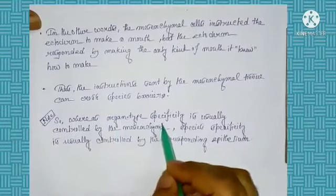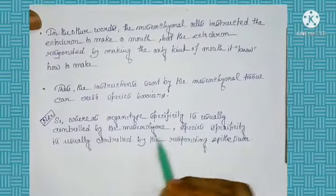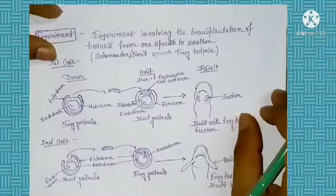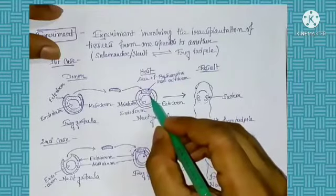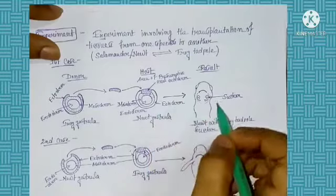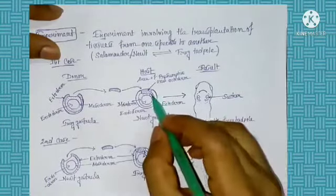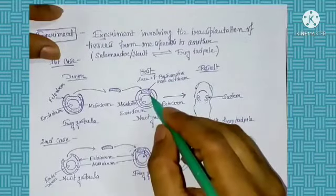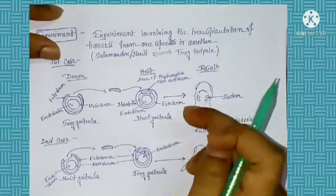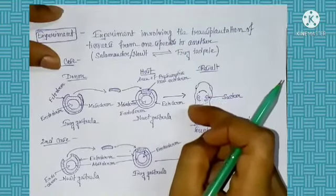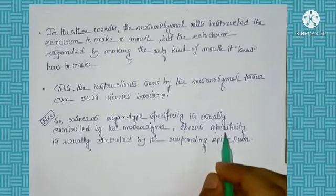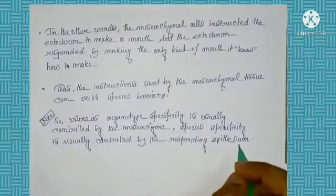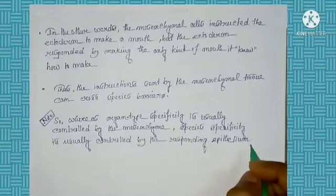The important note is that whereas the organ type specificity is usually controlled by the mesenchymal tissue, the species specificity is controlled by the responding epithelium. The mesoderm induces the ectoderm to form a mouth, but which type of mouth is formed — either frog-like or salamander-like — is specified by the gene present in the ectodermal cell. So the species specificity is controlled by the responding epithelium cell. I hope you understand today's class; if you understood this class, please hit the like button and subscribe to my channel.